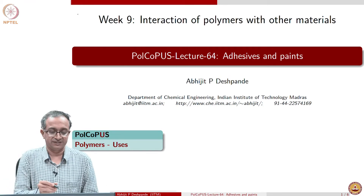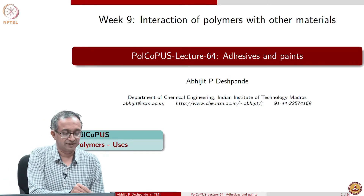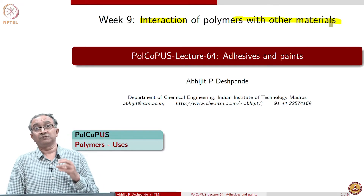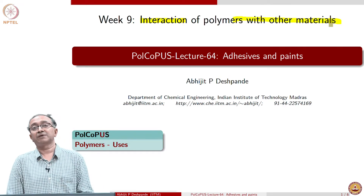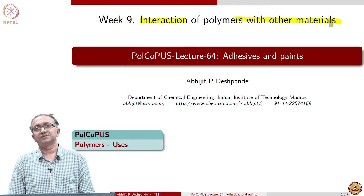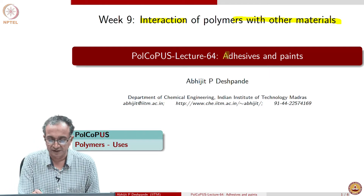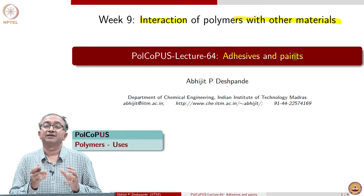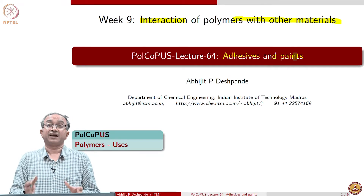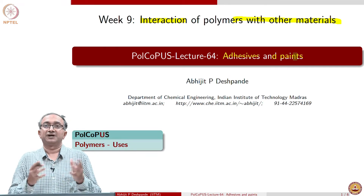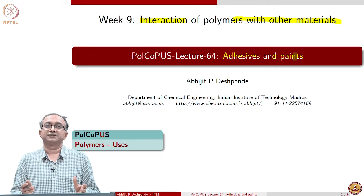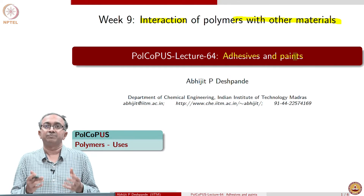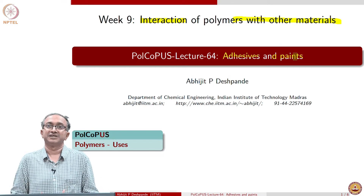Since in this week we are discussing interaction of polymers with other materials, one of the most important applications in which macromolecular systems are very common are adhesives and paints, which by definition are substances which interact with other substances. Adhesives are something which bond different materials together and paints, of course, coat different materials.